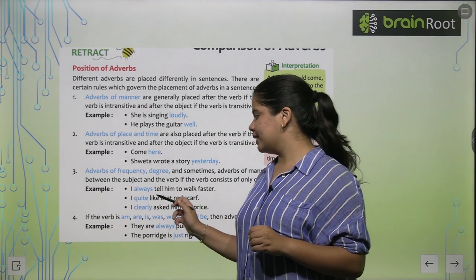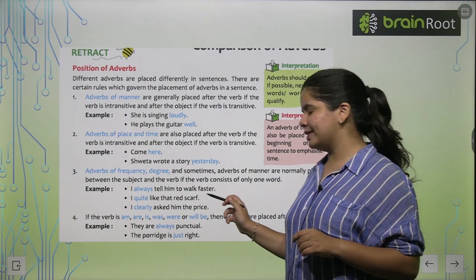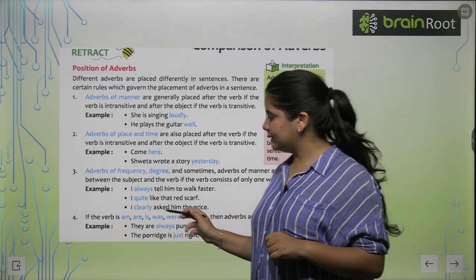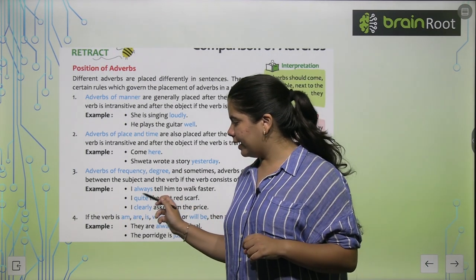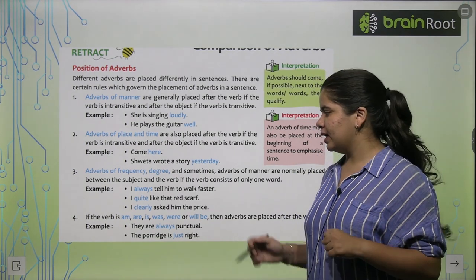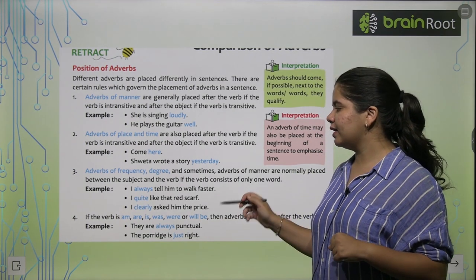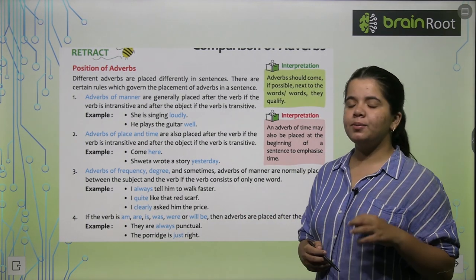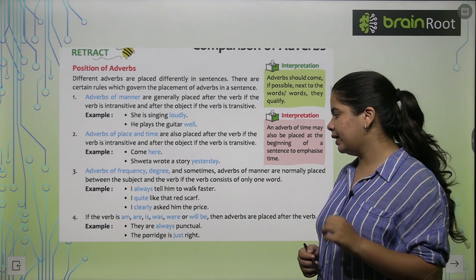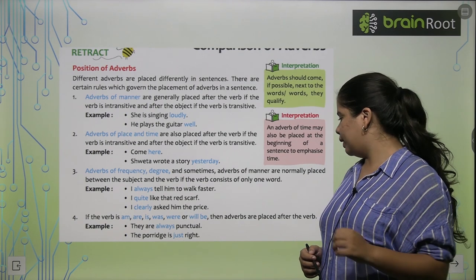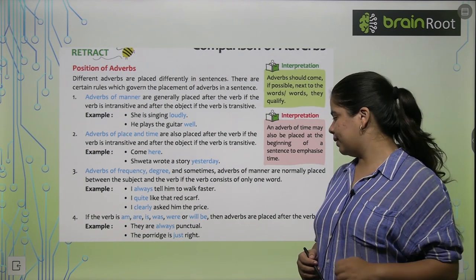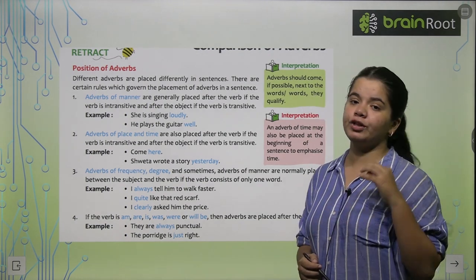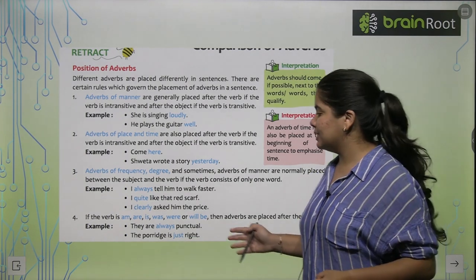Next: 'I quite like that red scarf.' So 'quite' comes between 'I' and 'like.' For the fourth point, if our verb is am, is, are, was, or were, the adverb comes after the verb. For example, 'they are always punctual.'